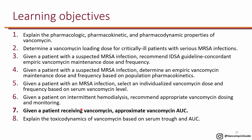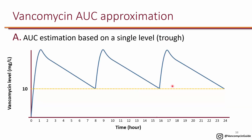The next learning objective is: given a patient receiving vancomycin, approximate vancomycin AUC. Remember that AUC is for a 24-hour period of time. In this example we're showing Q8 dosing of vancomycin. On the horizontal axis you have time from 0 to 24, and on the vertical axis we have vancomycin concentration in the blood. If you give vancomycin three times a day or Q8, you get a peak three times, and the area under all of these would be the AUC for a 24-hour period. Now if you get a single trough level, the question is: can you estimate how much the AUC would be?